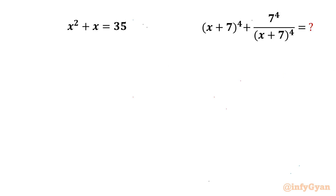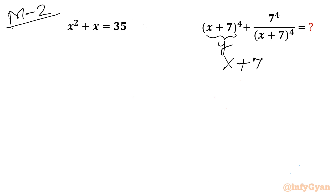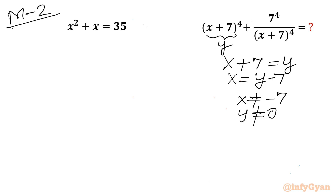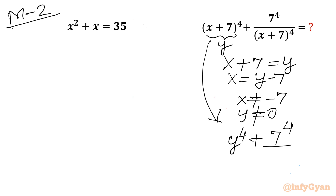Now let us consider Method 2. Here I will assume x + 7 = y, so x = y - 7. Note that x ≠ -7 means y ≠ 0. What we need to calculate becomes y^4 + 7^4 / y^4.